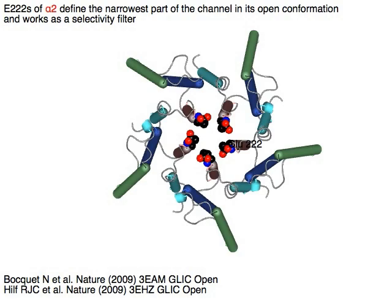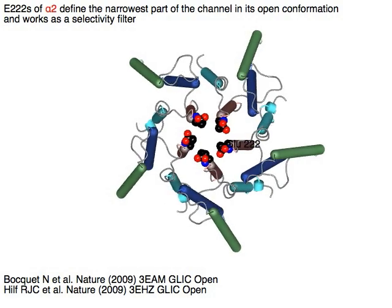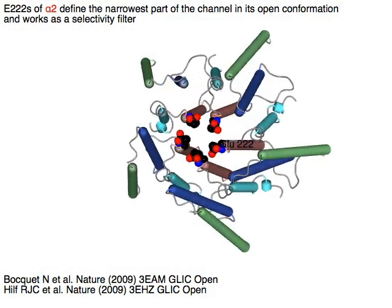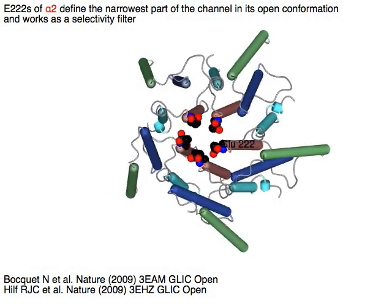E222 of alpha 2 defines the narrowest part of the channel and works as a selectivity filter.